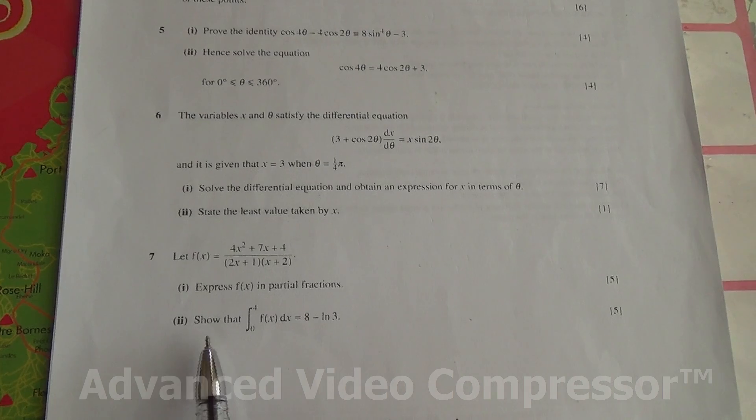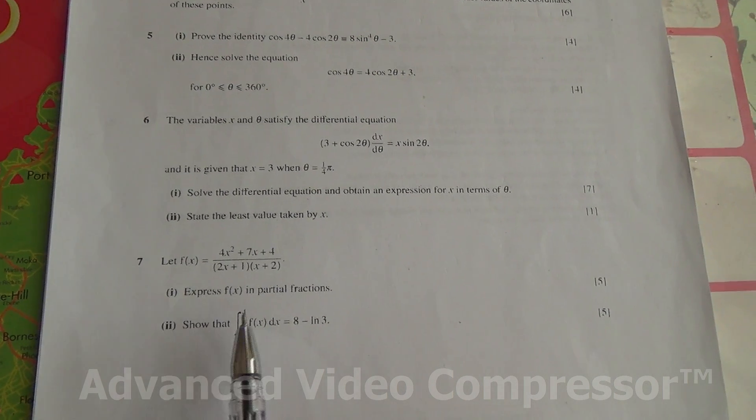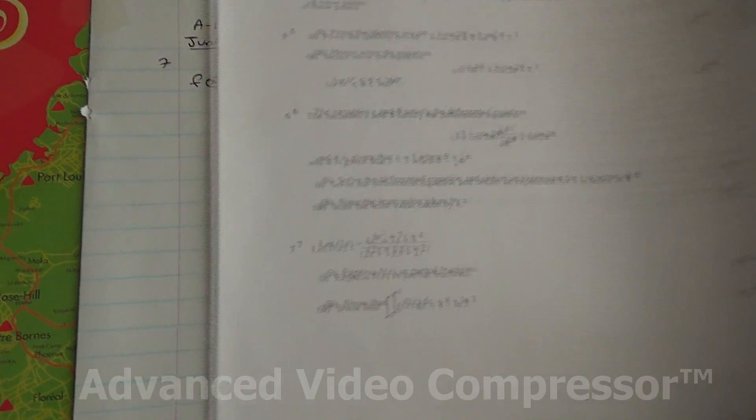Second part, show that the integral of f(x) dx with limits from 0 to 4 is equal to 8 minus ln 3. Okay, first of all, we need to express it in partial fractions.